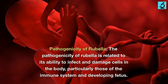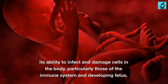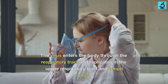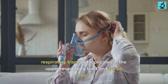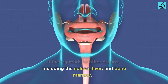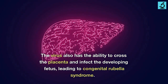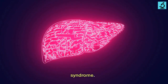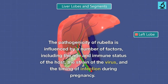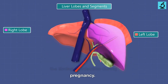Pathogenicity of rubella. The pathogenicity of rubella is related to its ability to infect and damage cells in the body, particularly those of the immune system and developing fetus. The virus enters the body through the respiratory tract and replicates in the upper respiratory tract and lymph nodes. It then spreads to other organs, including the spleen, liver, and bone marrow. The virus also has the ability to cross the placenta and infect the developing fetus, leading to congenital rubella syndrome. The pathogenicity of rubella is influenced by a number of factors, including the age and immune status of the host, the strain of the virus, and the timing of infection during pregnancy.